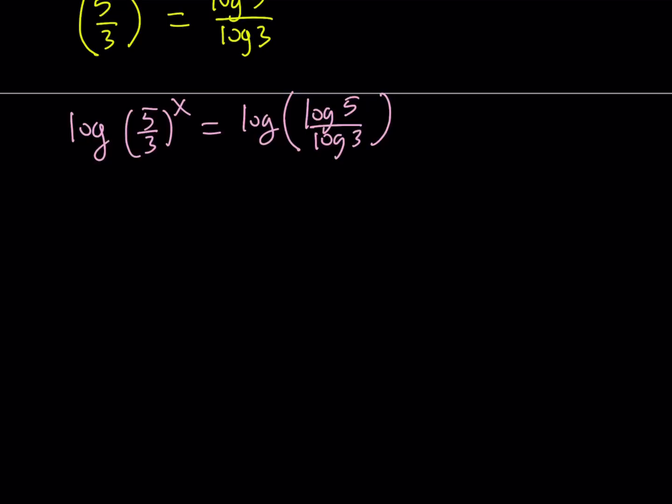Now, since x is an exponent, we can move it forward. Like this. And then, using the property of log a over b, which can be written as log a minus log b, we can separate these two as log of log 5 minus log of log 3.